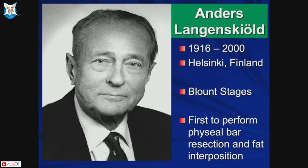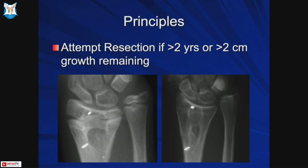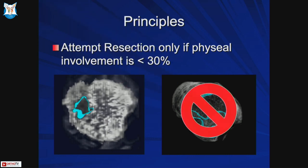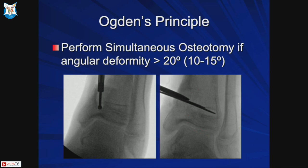Physeal bar resection, also known as epiphysiolysis, was first described by Langenskiöld for Blount disease - he defined Blount staging and was first to perform bar resection with fat interposition. You attempt resection if more than two years or two centimeters of growth remain. Marking wires are placed in the epiphysis and metaphysis to confirm physeal growth. Resection is only attempted if physeal involvement is less than 30%.